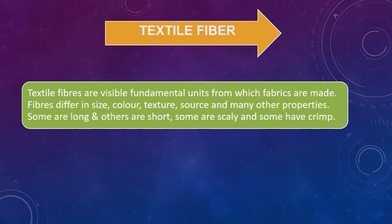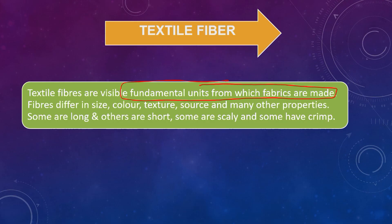Textile is an umbrella term, and fiber is again an umbrella term. We have different kinds of fibers, but in this industry we are focusing on the textile industry. Textile fiber — what is it? Basically, textile fibers are the visible fundamental unit from which fabrics are made. If you want to make a shirt, you need fabric. For that fabric, you need yarn. For that yarn, you need a polymer, then molecules.